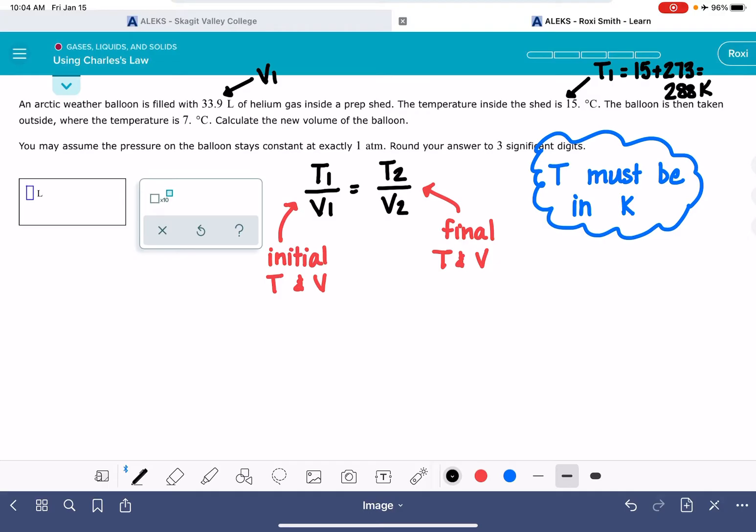And then it says the balloon is taken outside where the temperature is 7. That's our final temperature. And let's convert that to Kelvin as well. 7 plus 273 is 280.